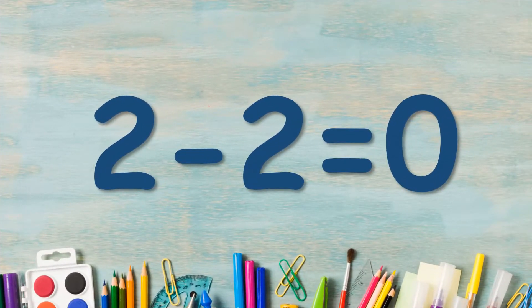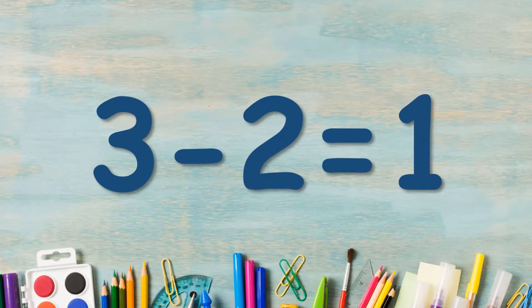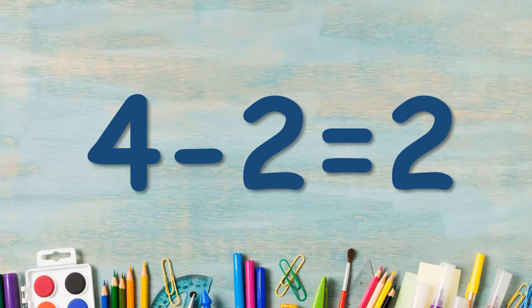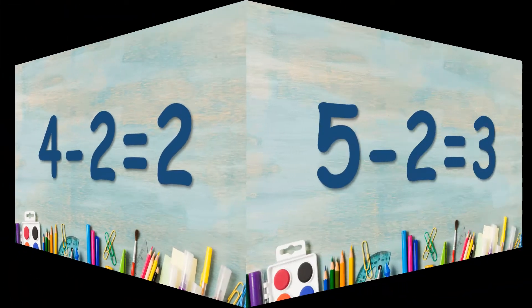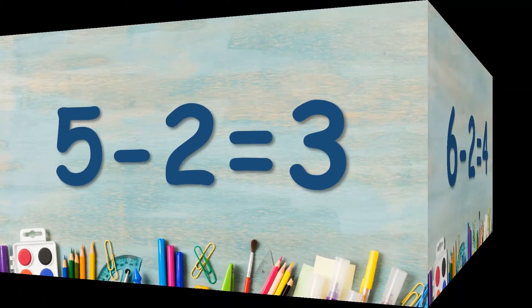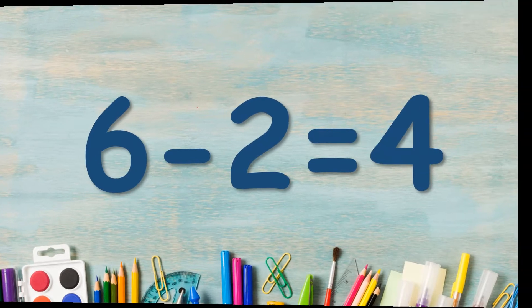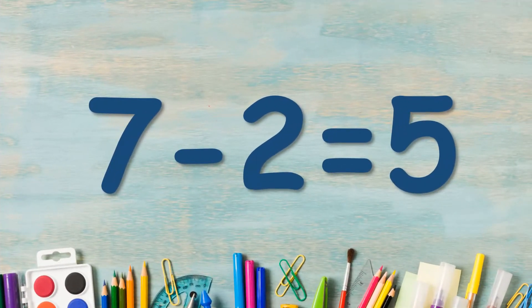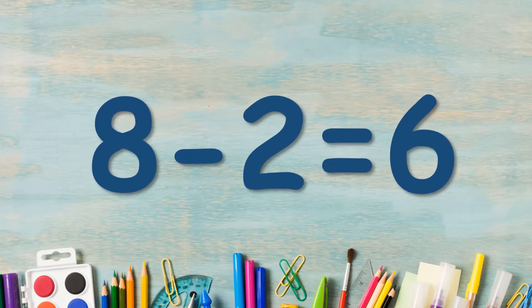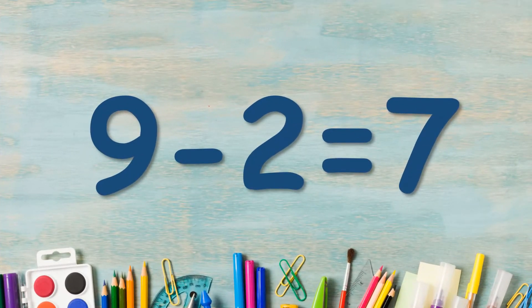2 minus 2 is equal to 0. 3 minus 2 is equal to 1. 4 minus 2 is equal to 2. 5 minus 2 is equal to 3. 6 minus 2 is equal to 4. 7 minus 2 is equal to 5. 8 minus 2 is equal to 6. 9 minus 2 is equal to 7.